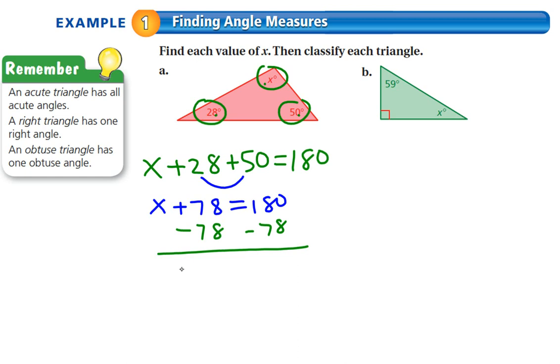So in example A, the red triangle here, x is equal to 102 degrees. So if I look in my angles, I have an angle that's 28, an angle that is 50, and now I know I have an angle that's 102. So this is an obtuse triangle.